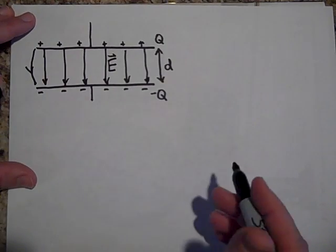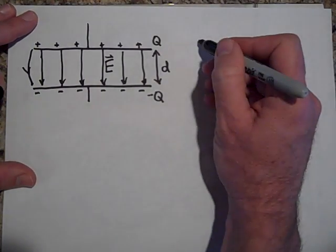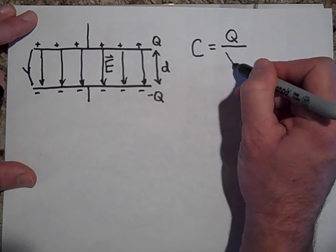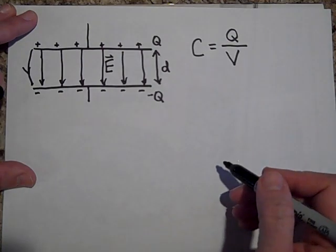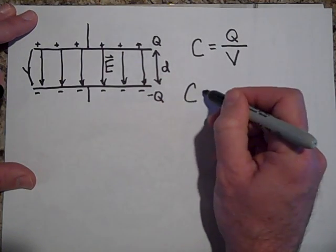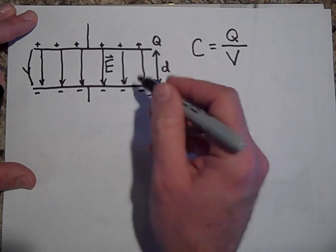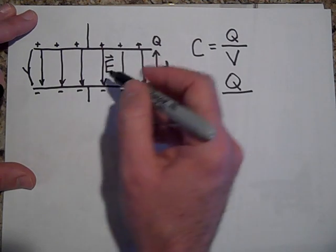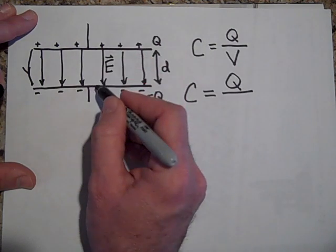All right, now with this type of a capacitor, if we use our definition for capacitance C equals Q over V, then the voltage across this capacitor, if we charge this up Q, the voltage across that capacitor is if I do a path integral from here to there.